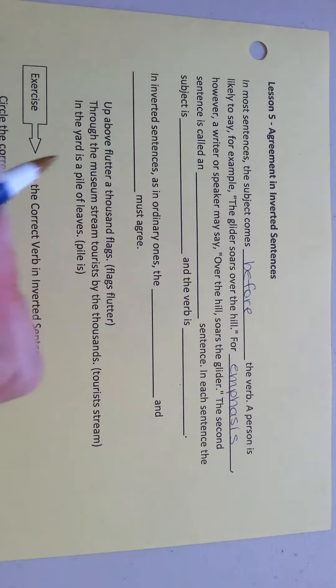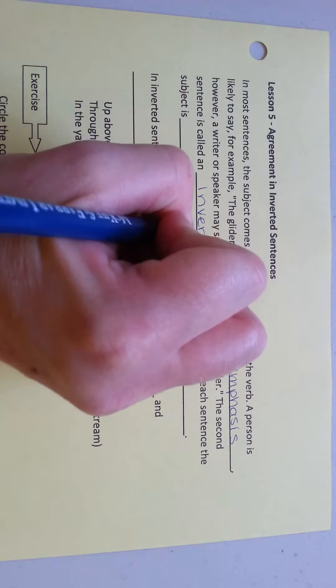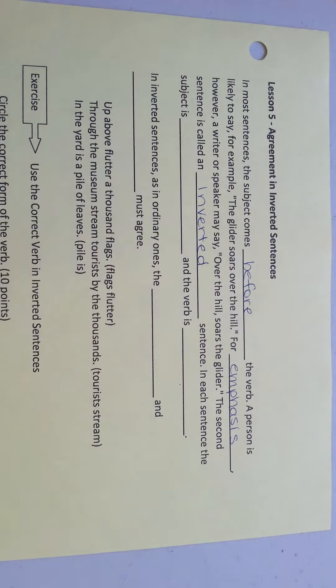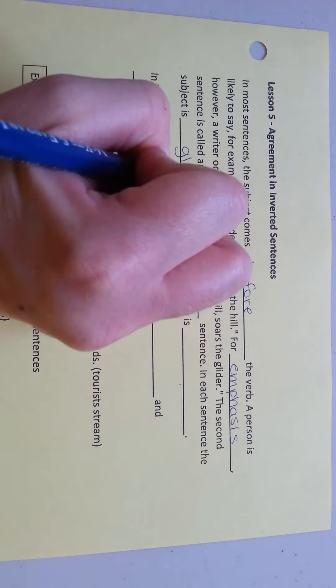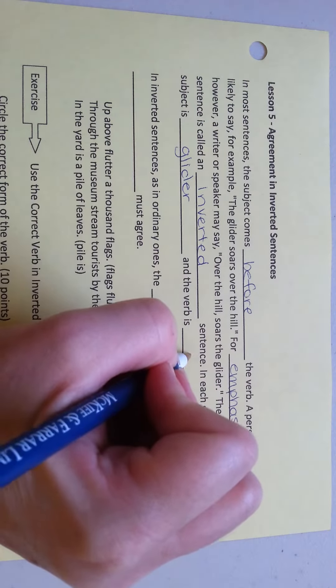The second sentence is called an Inverted Sentence. In each sentence, the subject is glider and the verb is soars.